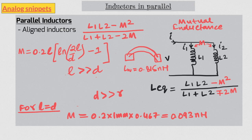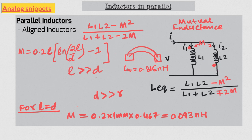Now let's move to anti-aligned inductors, but first a note about dot convention. How do you know if M is for aligned or anti-aligned inductors? The answer is dot convention. We put a little dot at one end of each inductor. If dots are placed on the same side, it represents aligned inductors, and mutual inductance increases the net inductance. For anti-aligned inductors, dots are placed at opposite corners. If current enters the dot of one inductor but leaves at the dot of the other, that is the anti-aligned case.